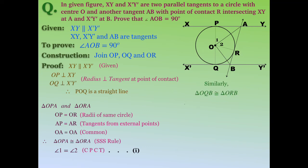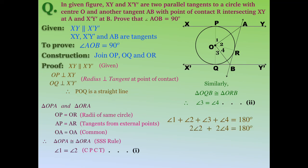Similarly, triangle OQB is congruent to triangle ORB, so angle 3 equals angle 4 — Result 2. Since POQ is a straight line, angle 1 + angle 2 + angle 3 + angle 4 = 180 degrees. Using Results 1 and 2: 2×angle 2 + 2×angle 4 = 180 degrees, so angle 2 + angle 4 = 90 degrees. From the figure, angle 2 + angle 4 is angle AOB, hence angle AOB = 90 degrees.